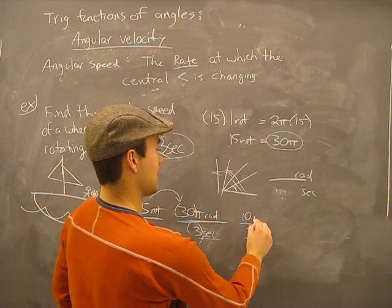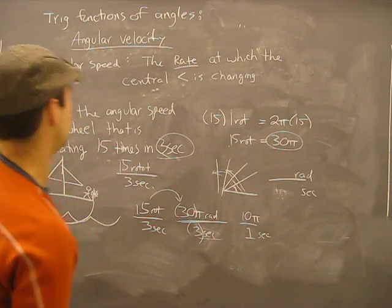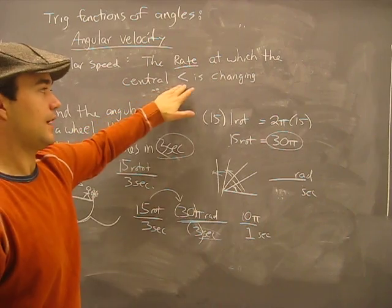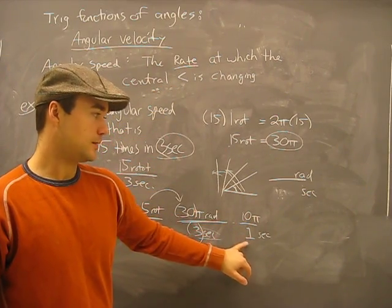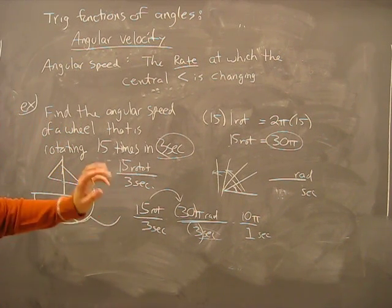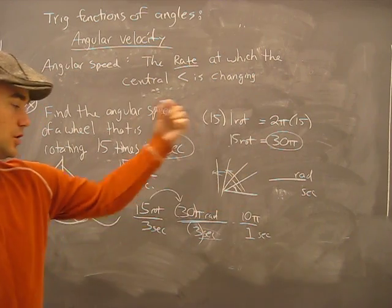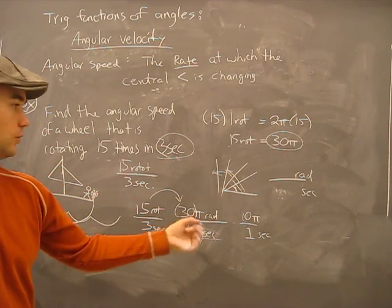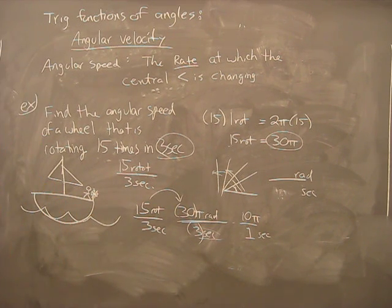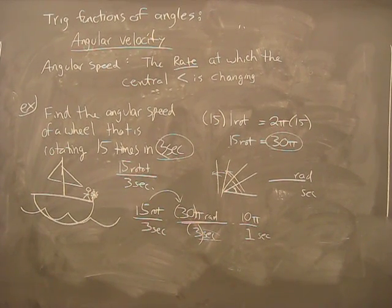What we get is ten pi radians over one second. This means the angular speed of the wheel — the rate at which the central angle is changing — is ten pi radians per second. That's the answer. How we got there: each rotation is two pi radians, so fifteen rotations is fifteen times two pi. Hit pause and rewind if you need to. Send me an email — I'll gladly remake the video if it needs to make more sense. Sometimes I start to babble.